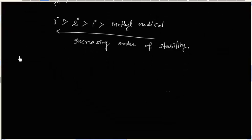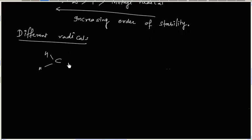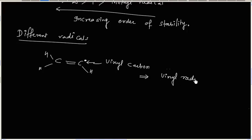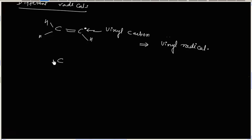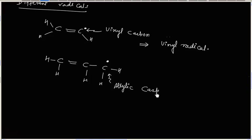Similarly, like carbocations, we can have different kinds of radicals. We can have a vinyl radical — the carbon is called vinylic carbon and the radical over it is the vinyl radical. We can also have an allylic radical; the carbon is called allylic carbon. Allylic radicals are resonance-stabilized.